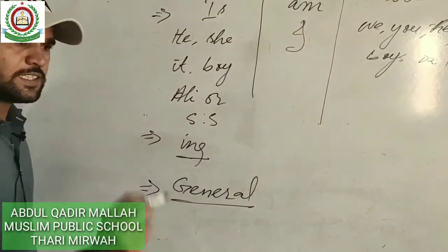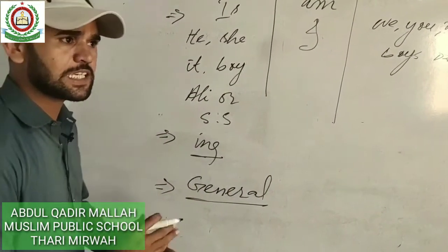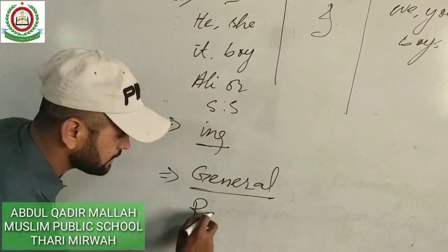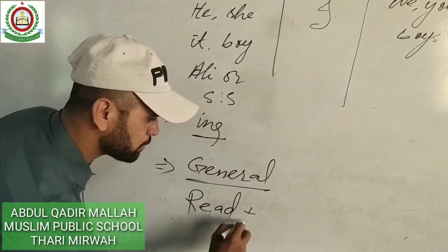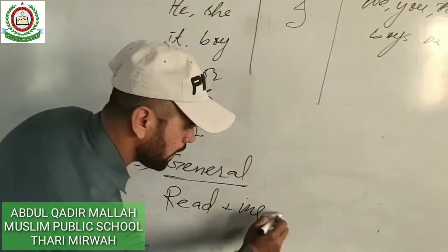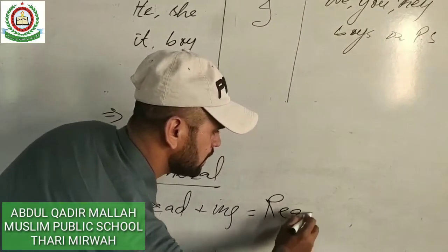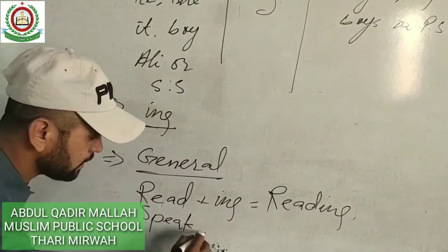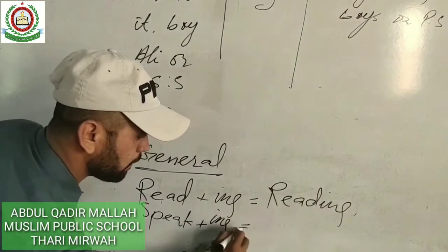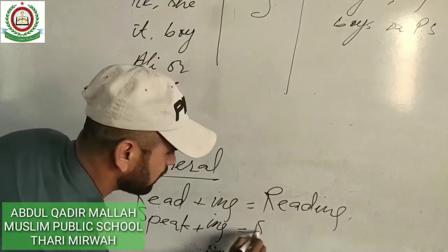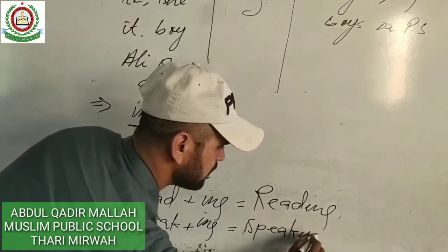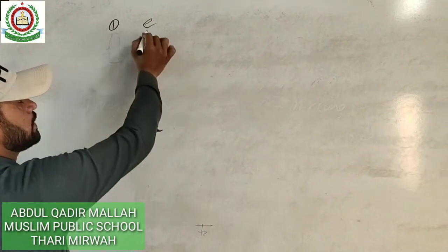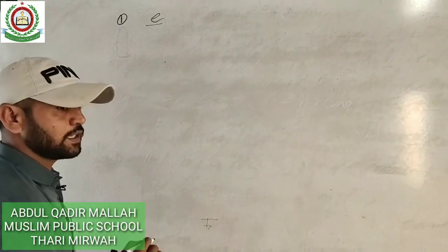First, there is a general rule: we add -ing with the main verb to form the fourth -ing form. For example, the word 'read' becomes 'reading.' The word 'speak' becomes 'speaking.' This is the basic rule for forming the -ing form.